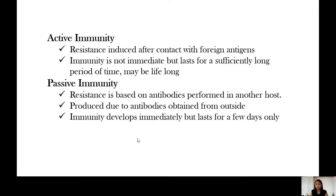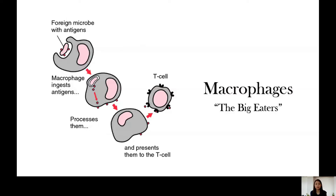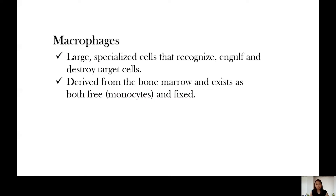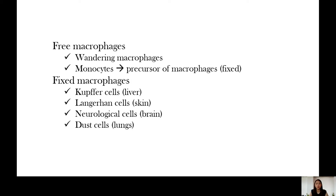Macrophages are known as the big eaters. When a macrophage recognizes the antigens on a foreign microbe, it will engulf or eat up these foreign invaders. Macrophages are large specialized cells that recognize, engulf, and destroy target cells. They are derived from the bone marrow and exist as both free and fixed. The free macrophages, also called wandering macrophages or monocytes, are precursors of the fixed macrophages.